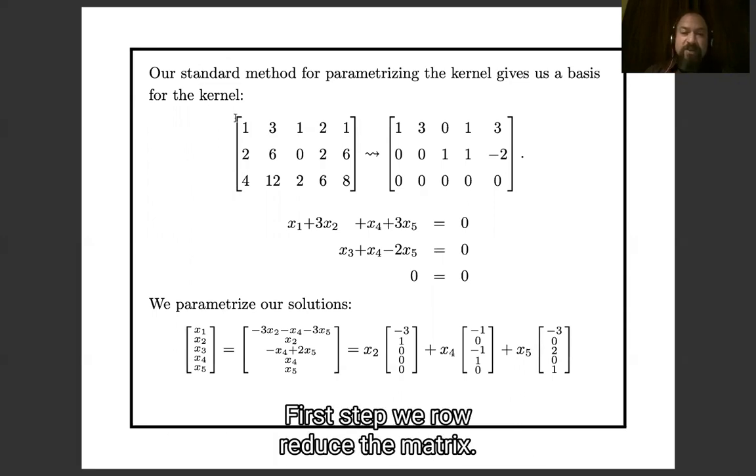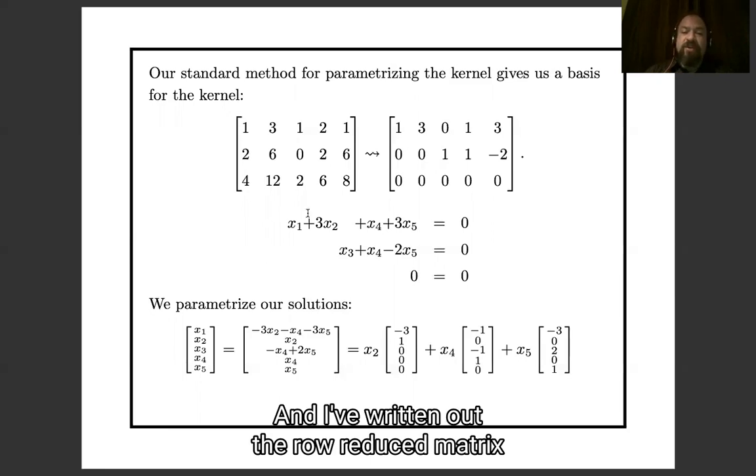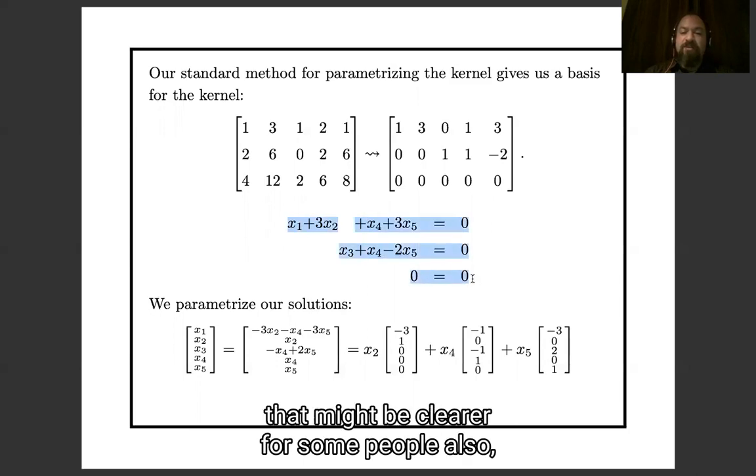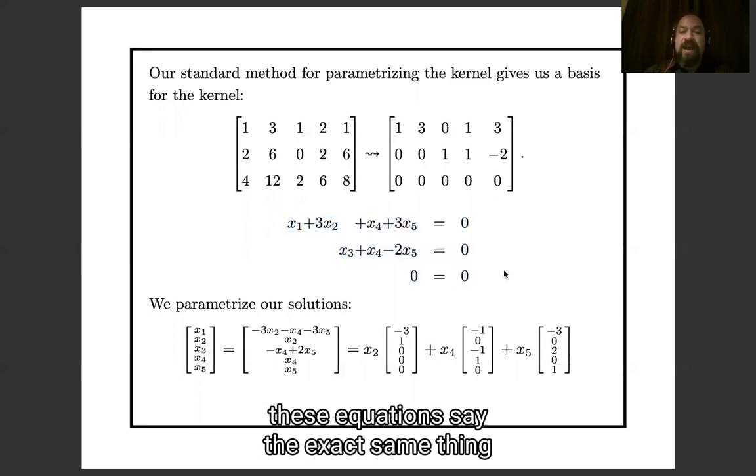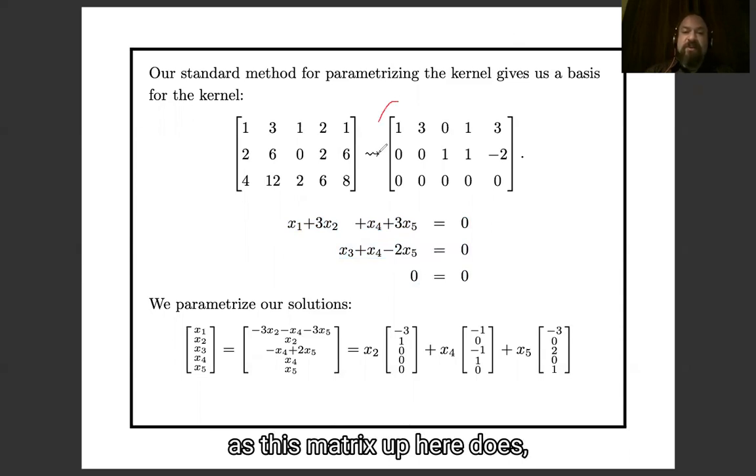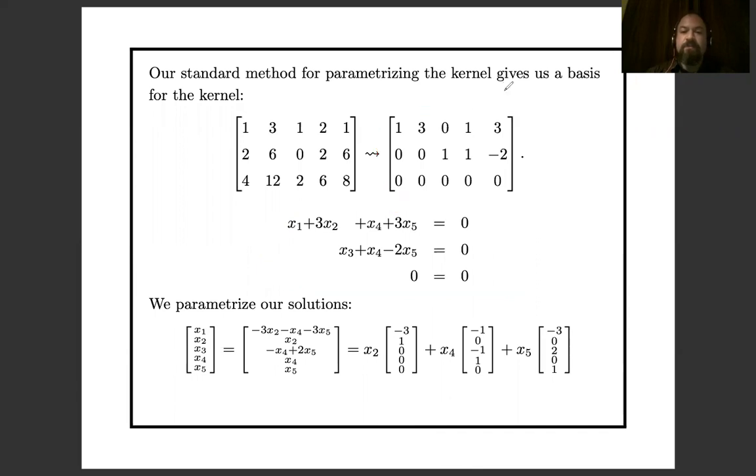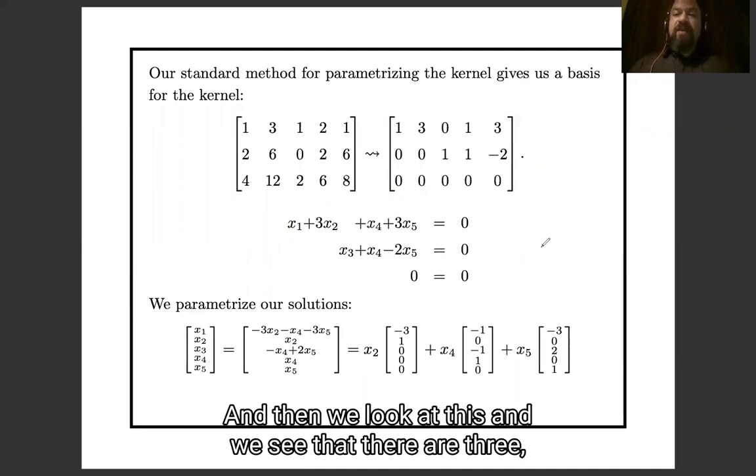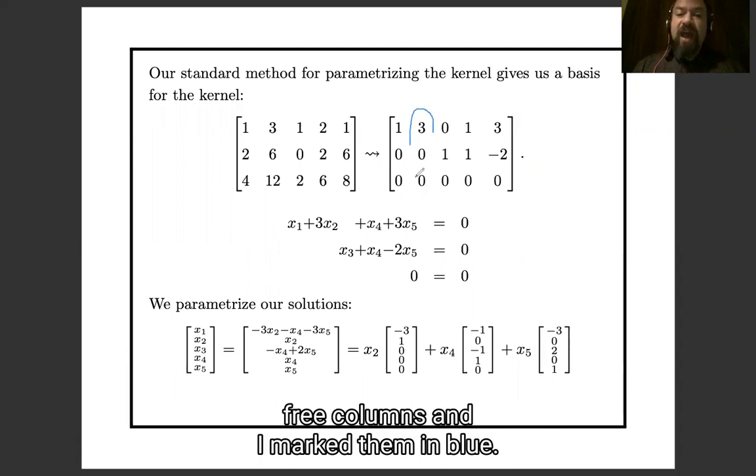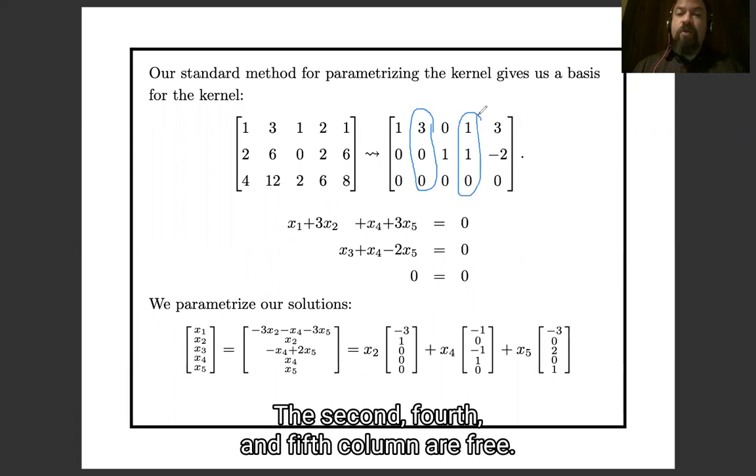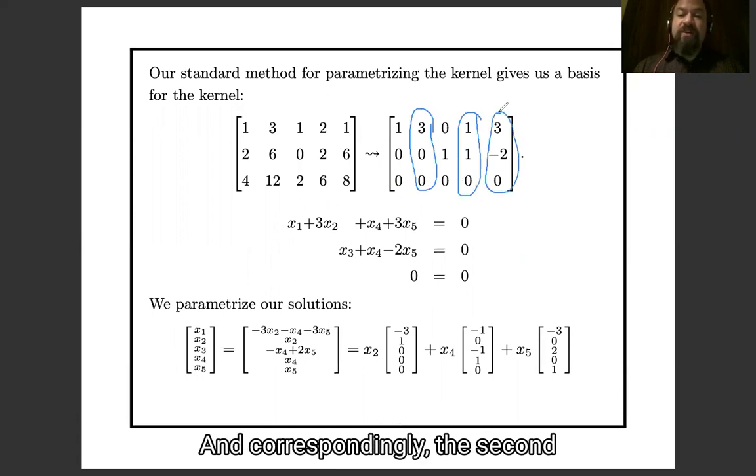First step we row reduce the matrix, and I have written out the row reduced matrix as a list of equations here because I think that might be clearer for some people. So these equations say the exact same thing as this matrix up here does. This and this say the same thing. And then we look at this and we see that there are three free columns. I'm marking them in blue. The second, fourth and fifth column are free and correspondingly the second, fourth and fifth variable are free.